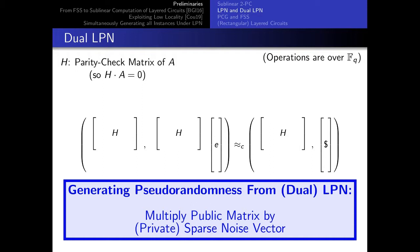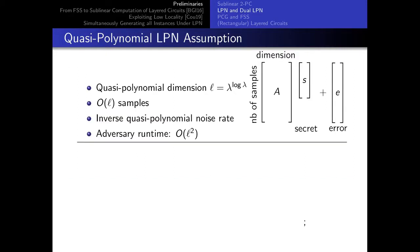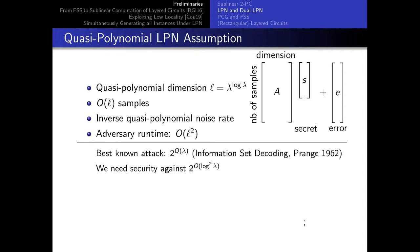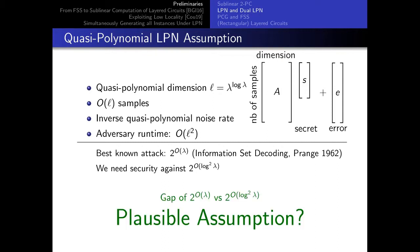Looking at the parameter values for our specific flavor of assumption — the quasi-polynomial LPN assumption, or super-polynomial if you will — roughly, we assume that the adversary is allowed to run in slightly super-polynomial time. The best-known attack is exponential. I'll leave you to judge whether the gap between the best-known attack and the level of security we require is large enough to justify this assumption.